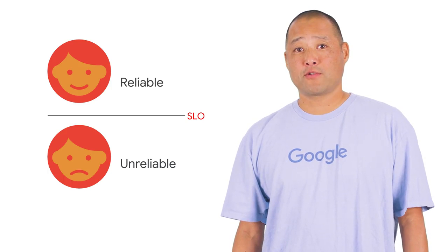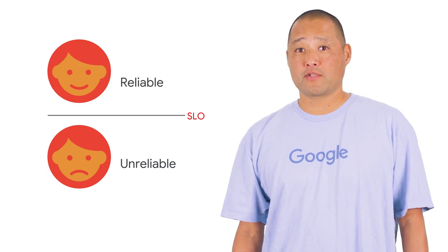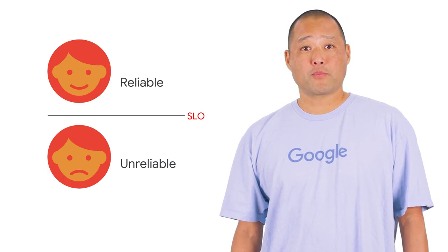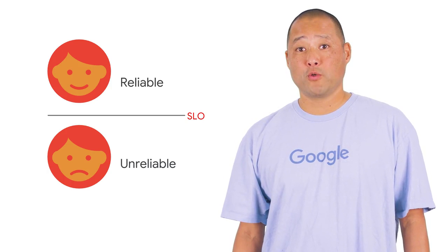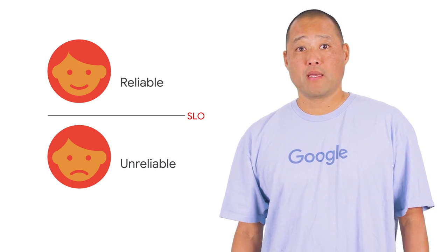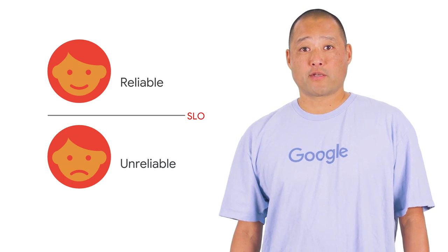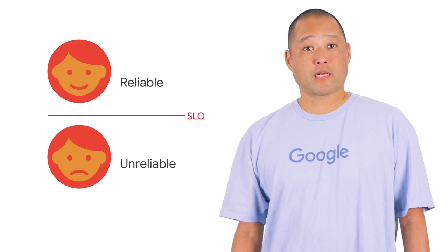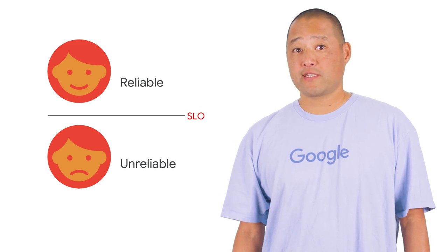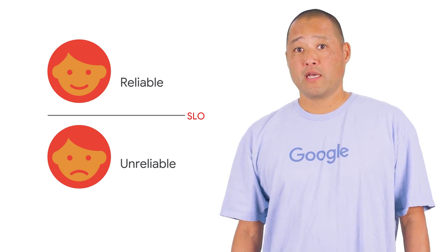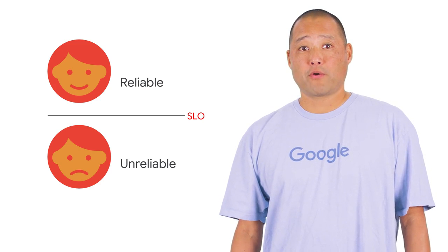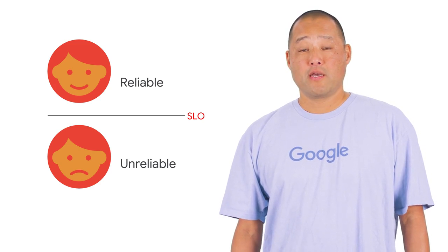As we said earlier, an SLO draws a line at which, to the best of your knowledge, users start to become unhappy with your service because it is too unreliable. But everyone in your organization working on the service — product managers, developers, SREs, and executives — need to know both where that line is and what happens when it is crossed.